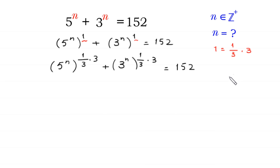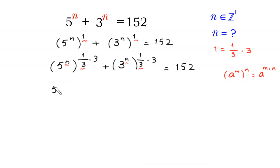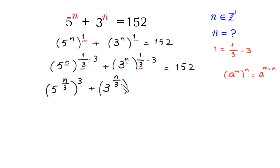According to the property of exponents, a to the power m whole to the power n equals a to the power m times n. We multiply the inner power n with 1 over 3, giving us 5 to the power n/3 (whole to the power 3) plus 3 to the power n/3 (whole to the power 3) is equal to 152.